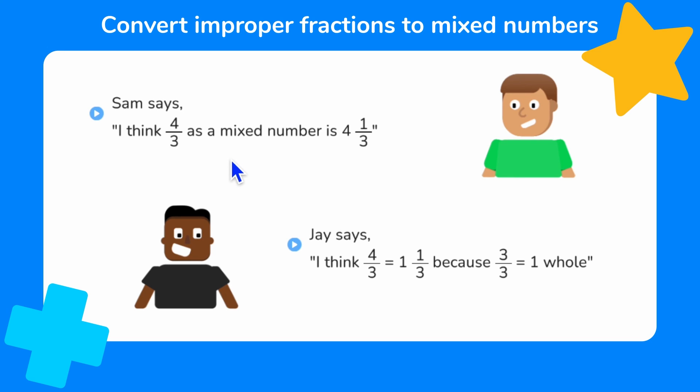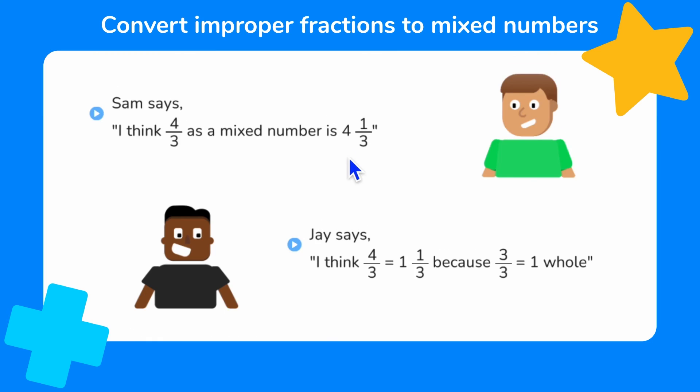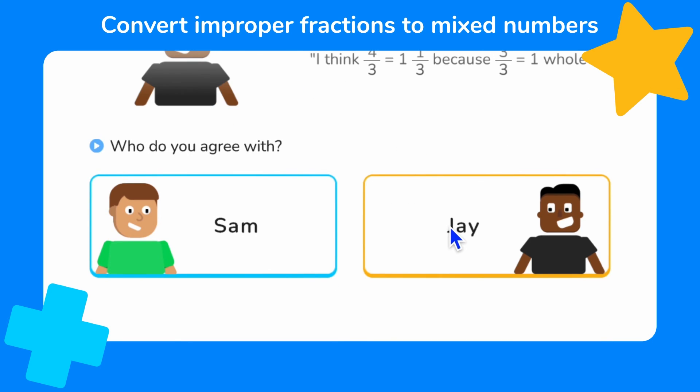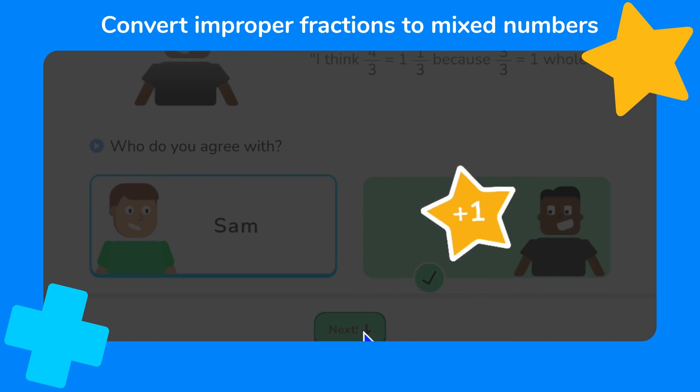I think Sam has made an error here. He's put the numerator as the whole number. But Jay's right that 3 thirds equals 1 whole. So 4 thirds equals 1 and 1 third. So I'm going to say I agree with Jay. Excellent.